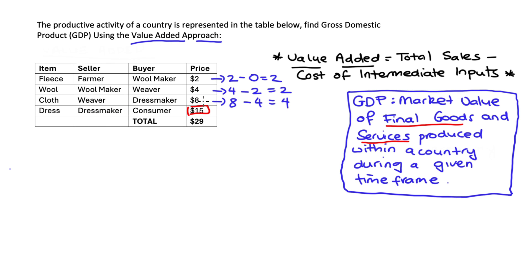How about the dressmaker? The dressmaker buys the cloth for $8 and then makes a dress with that cloth. The consumer buys that dress for $15. So $15 minus $8 — that's the cost of the intermediate input, the cloth — equals $7. That's our value added at each stage of the production of the dress. Let's add them all up.